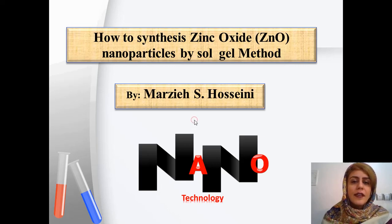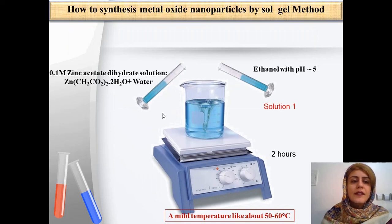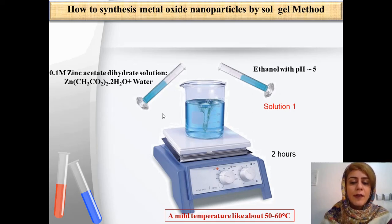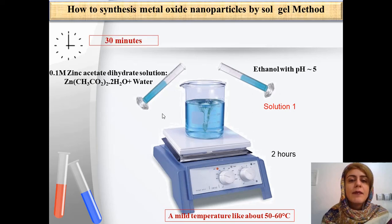For this purpose, zinc acetate dehydrate is used as precursor. A solution of 0.1 molar of zinc acetate dehydrate is added to ethanol with a pH value of 5, and this solution is stirred for about 30 minutes.